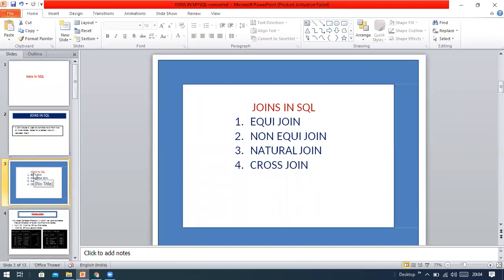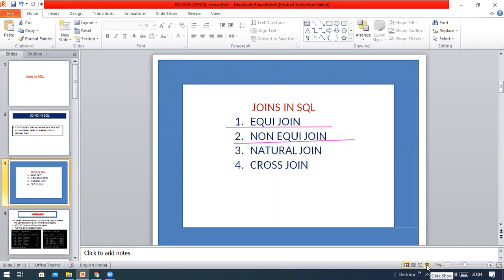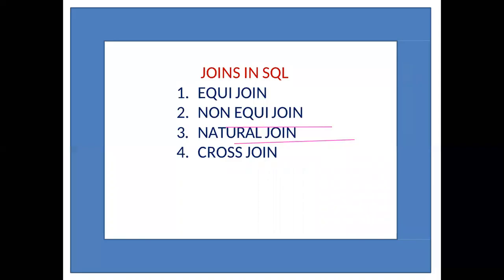These are the types of joins in SQL. The first one is equi-join, the second is non-equi-join, the third is natural join, and the fourth is cross join.